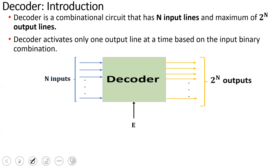If you look at input combinations, you will activate one output line. A decoder activates only one output line at a time based on the input binary combination. With two input lines, the output is 2 power n — that is 2 power 2 — giving 4 output combinations.